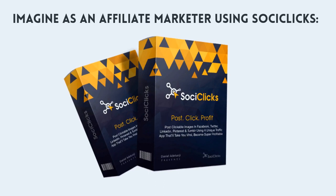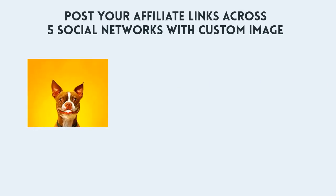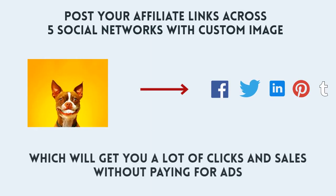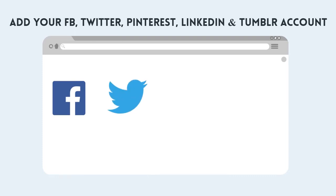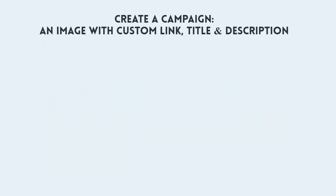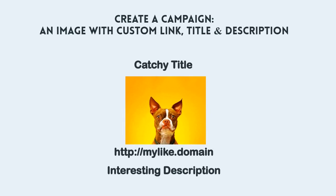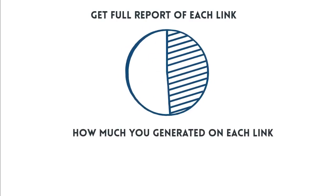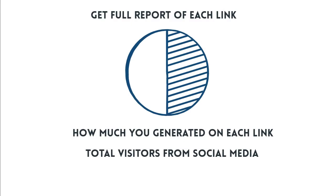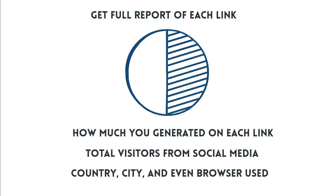Imagine as an affiliate marketer using SoCeClicks — all you need to do is post your affiliate links across five social networks with a custom image, which will get you a lot of clicks and sales, without paying for ads or doing any extra work. All you need to do is add your Facebook, Twitter, Pinterest, LinkedIn, and Tumblr accounts, create a campaign with an image, custom link, title, and description, then post to your Facebook profiles, pages, and groups. Get a full report of each link: how much you generated, total number of visitors from each social media platform, country, city, and even browser used — everything you need to improve your promotion campaign.